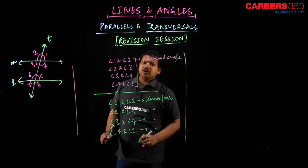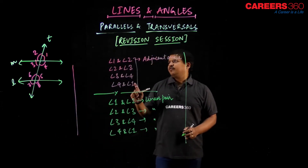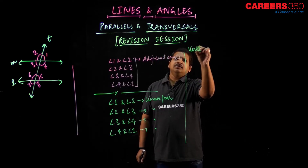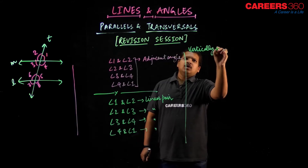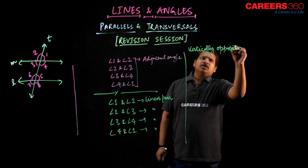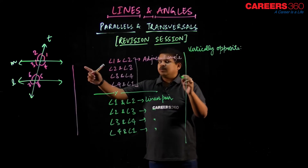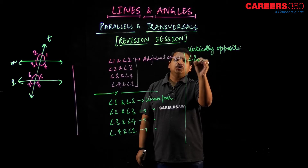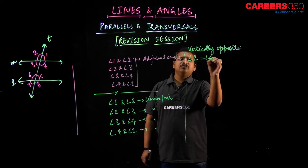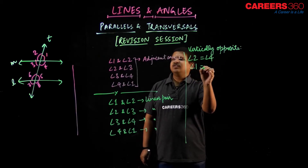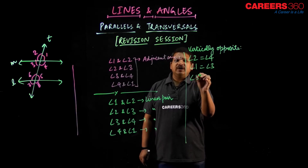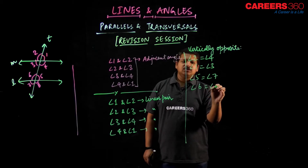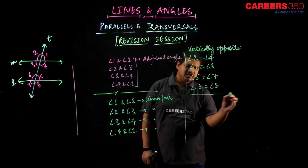Proceeding forward, we have vertically opposite angles. What are vertically opposite angles? As you can see, angle 2 equals angle 4, angle 1 equals angle 3, angle 5 equals angle 7, and angle 6 equals angle 8.